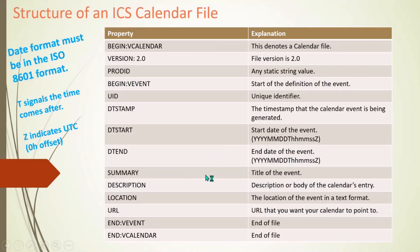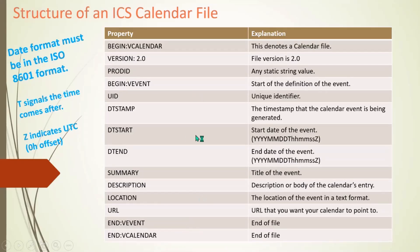SUMMARY is the title of the event. DESCRIPTION lets you specify what the event is about. LOCATION is the location of the event, and URL can also be included. These end parameters define the closing of the ICS file.